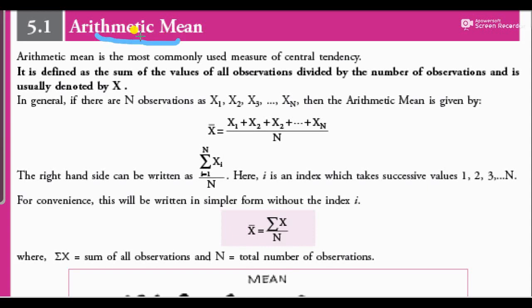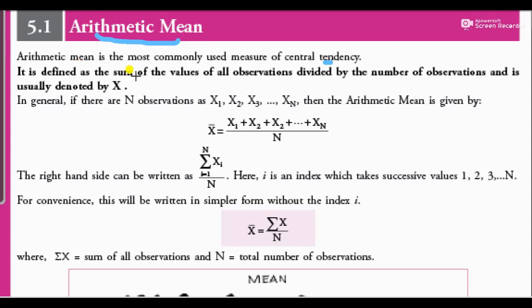Arithmetic Mean is the most commonly used measure of central tendency. It is defined as the sum of the values of all observations divided by the number of observations, and it is usually denoted by x̄.